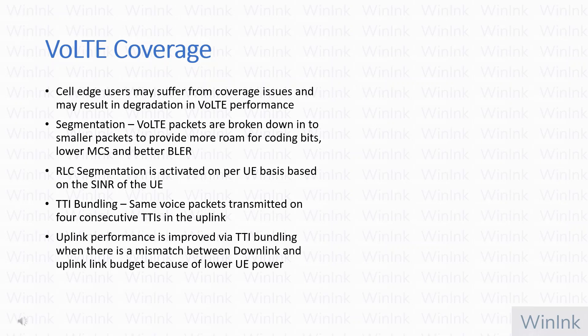In this slide we will cover Voice over LTE coverage and how to optimize it. Cell edge users may suffer from coverage issues resulting in degradation in VoLTE performance. In Voice over LTE we use segmentation — voice packets are broken down into smaller packets to provide more room for coding bits, lower MCS, and better block error rate. RLC segmentation is activated on a per-UE basis based on the SINR of the UE. RLC segmentation is an uplink technique used when uplink is showing poor performance. We can also use TTI bundling, where the same voice packets are transmitted on four consecutive TTIs in the uplink.